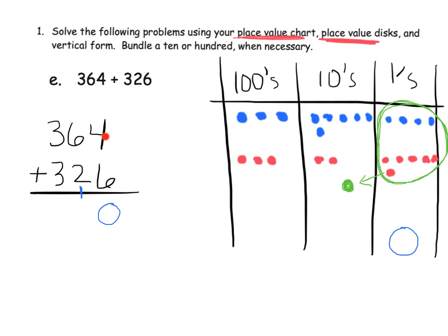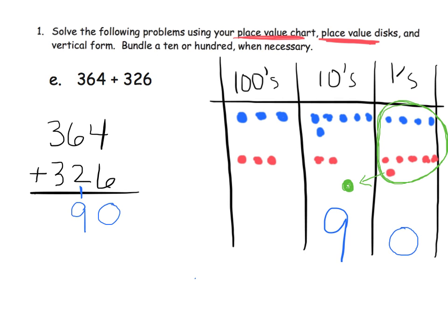This 1 got added to the tens column. So over here in our vertical form, it's going to look like 0 with a 1 carried. When we had 4 and 6, that's 10 — they all got cashed in to equal 1 additional disk in the tens column, and we had no disks left over in the ones column. Now let's count how many tens we have: 1, 2, 3, 4, 5, 6, 7, 8, 9. We have 9 in the tens column, and that's not enough to need any regrouping.